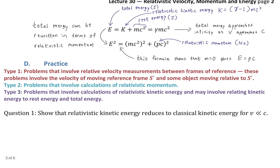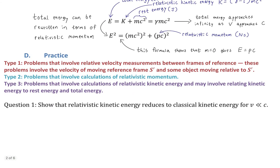Let's move into three types of problems to practice these ideas of relativistic velocity, momentum, and energy. Type one involves relative velocity measurements between frames of reference, involving the velocity of moving frame S-prime and some object moving relative to it. Type two involves calculations of relativistic momentum. Type three involves calculations of relativistic kinetic energy and relating kinetic energy to rest energy and total energy.